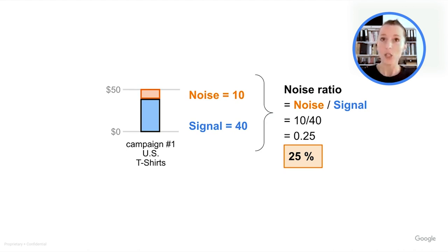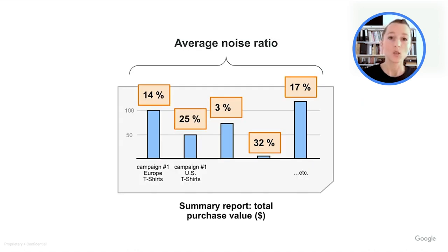And this calculation here, this noise ratio, is for one entry in my summary report. But what we want is to assess the noise ratio for a whole summary report. So what NoiseLab does to do that is simply calculate the noise ratio for each bucket here, and then make an average of these ratios over the whole report.